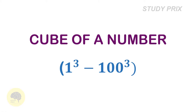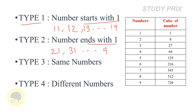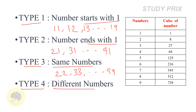Welcome to StudyFix. In this video we are going to learn how to find the cube of any number from 1 to 100 in just seconds. We will divide them into four types: Type 1 numbers start with 1 (11–19), Type 2 numbers end with 1 (21, 31, up to 91), Type 3 is same digits (22, 33, etc.), and Type 4 is different numbers. We also need to memorize the cubes from 1 to 9: 1, 8, 27, 64, 125, 216, 343, 512, 729.